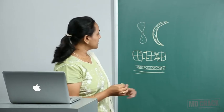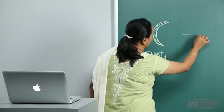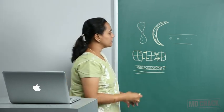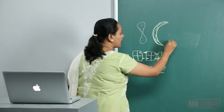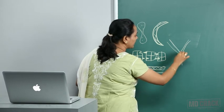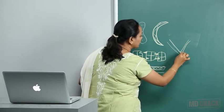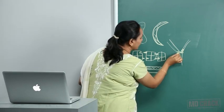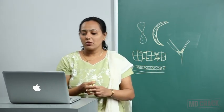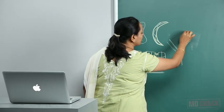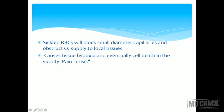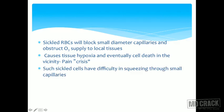Because of the sickle shape, these cells can block narrow capillaries. A normal biconcave RBC flows easily through capillaries, but sickle cells cannot squeeze through narrow ones, causing obstruction of oxygen supply to tissues — leading to tissue hypoxia, cell death, pain, and crisis. Fragile sickle cells also rupture, leading to hemolytic anemia.